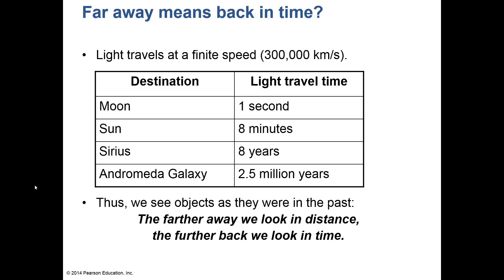One of the nearest stars to us is Sirius, eight light years away. A light year is how far something travels in one year at the speed of light — it's a distance, not a time. If you send a beam of light to the Andromeda galaxy, which is next door at two and a half million light years away, you're looking at that galaxy as it was 2.5 million years ago.